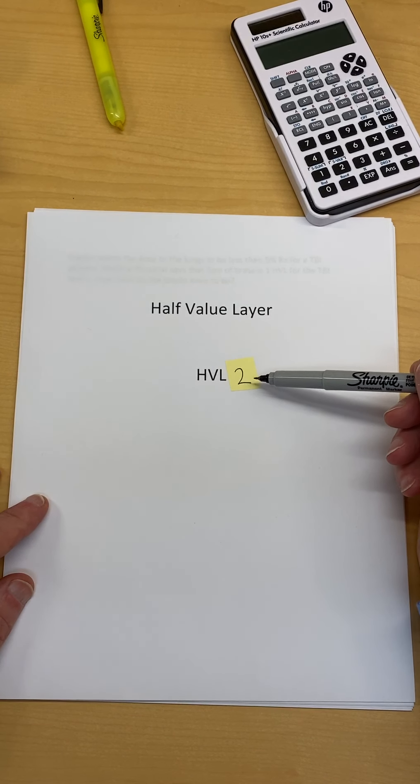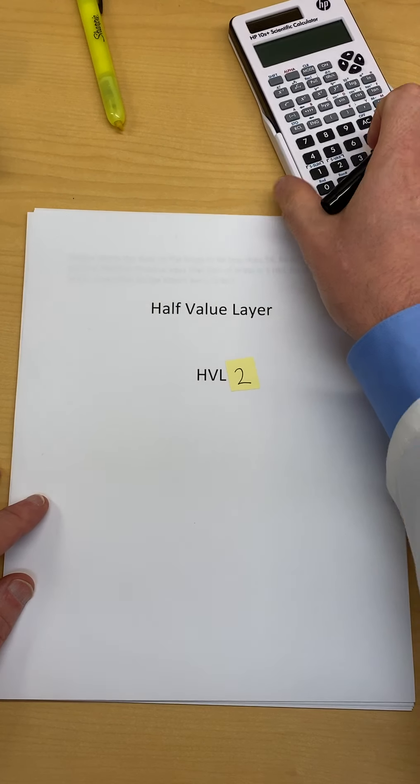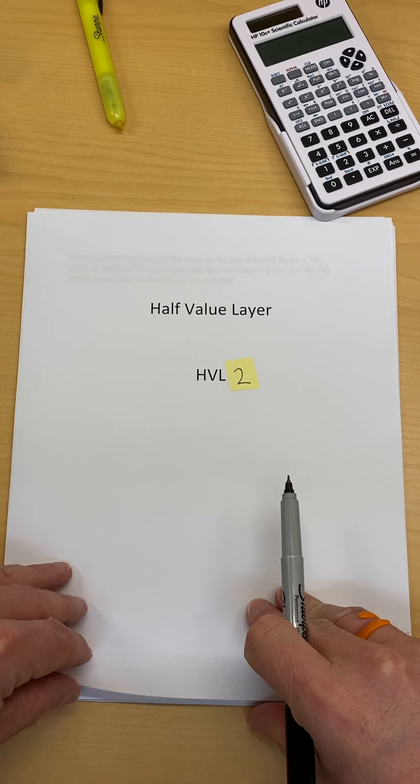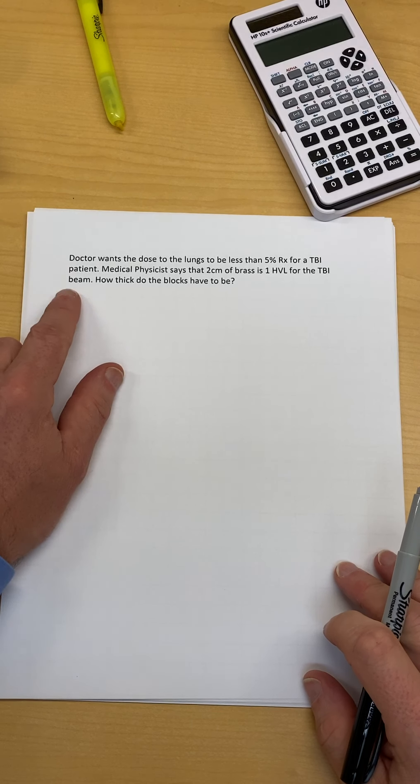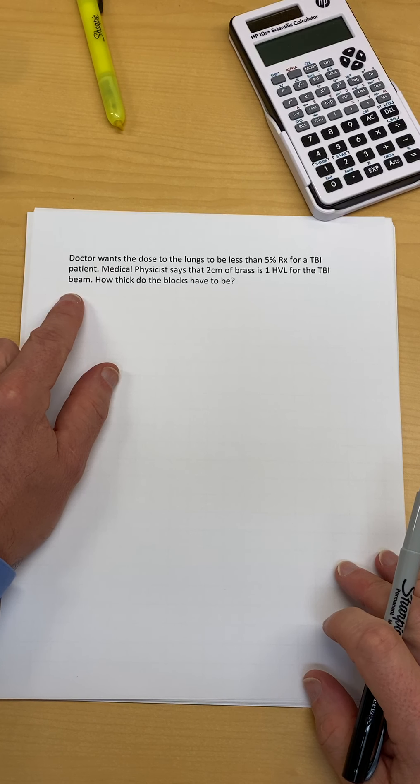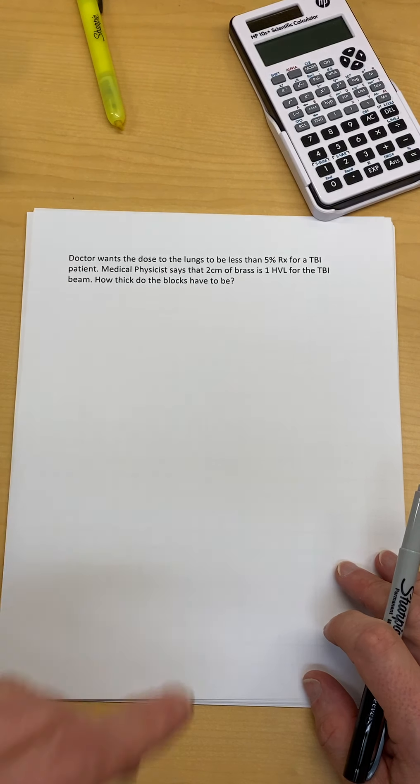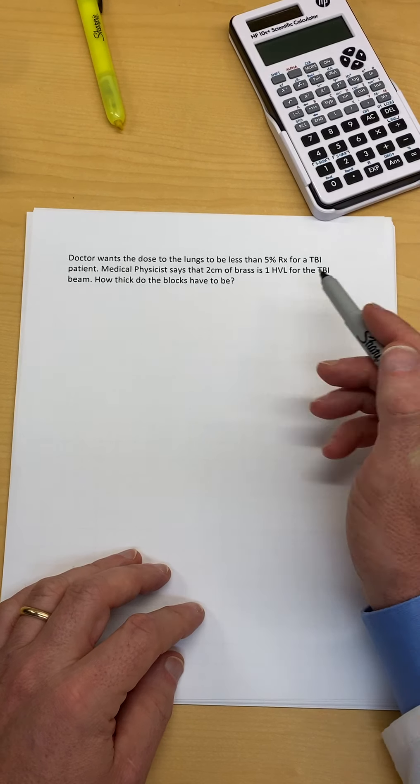Okay, we have half value layer number two, a second calculation using half value layer. We're going to use it a little differently this time. Here's the motivator: doctor wants the dose to lungs to be less than five percent prescription for a TBI patient. Medical physicist says that two centimeters of brass is one half value layer for the TBI beam that's used in your clinic.